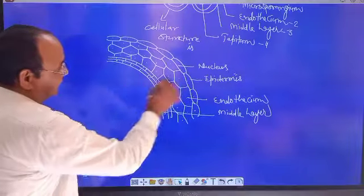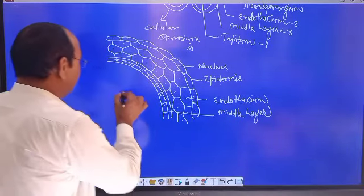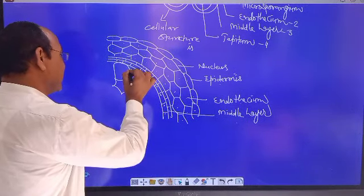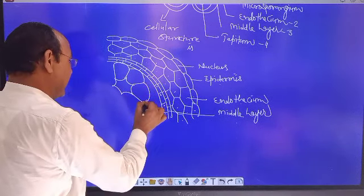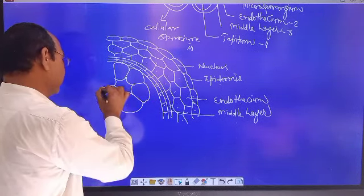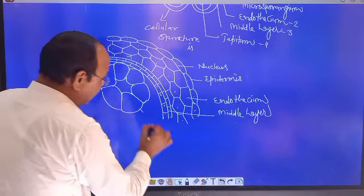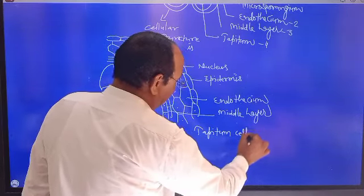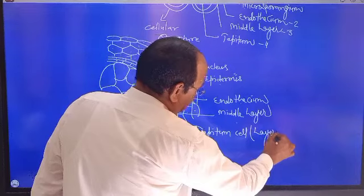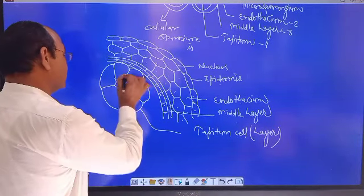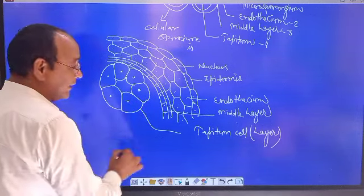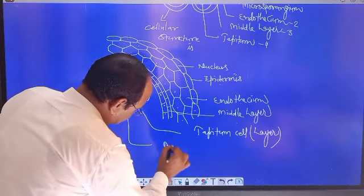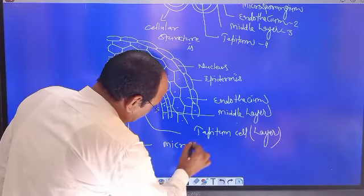The fourth and innermost layer cells are big in size and small in number. These cells are known as tapetum cells or the tapetum layer. The nucleus of the tapetum layer is visible, and the central part is known as microsporangium.